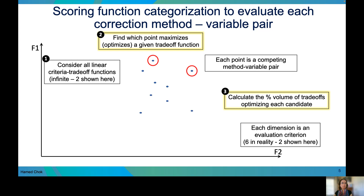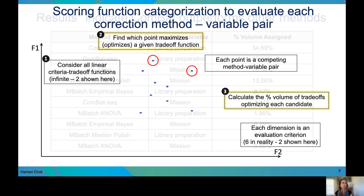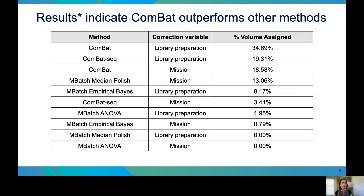Our initial results shown in this table indicate that COMBAT outperforms other methods. COMBAT correcting for the library preparation variable was assigned over 34% volume, followed by COMBAT-seq correcting for library preparation, and then COMBAT again correcting for the mission variable.